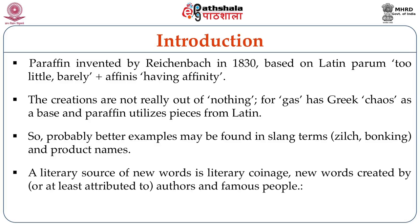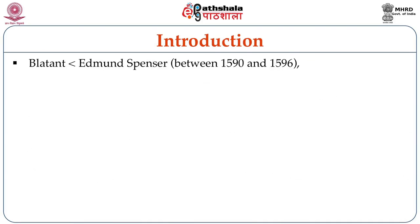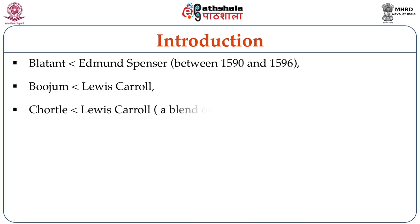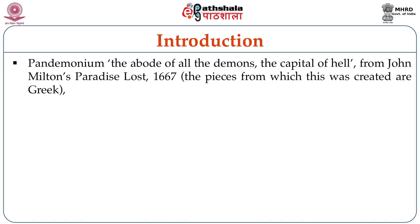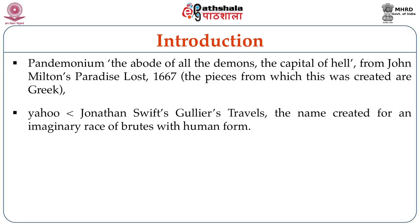A literary source of new words is literary coinage — new words created by or attributed to authors and famous people. 'Blatant' is supposed to have been created by Edmund Spenser between 1590 and 1596. 'Boojum' and 'Chortle' were created by Lewis Carroll — 'Chortle' being a blend of 'chuckle' and 'snort.' 'Pandemonium,' meaning the abode of all the demons and the capital of hell, comes from John Milton's Paradise Lost (1667), with pieces from Greek. 'Yahoo' was created by Jonathan Swift in Gulliver's Travels as the name for an imaginary race of brutes with human form.